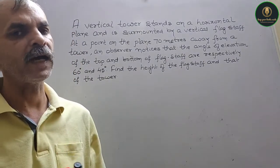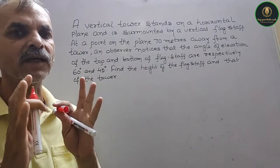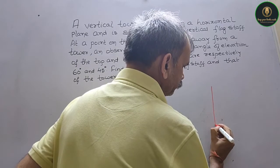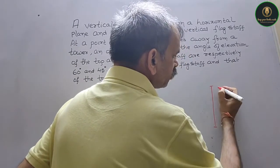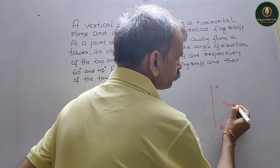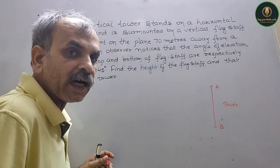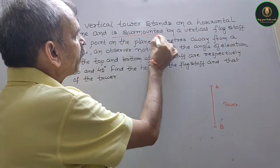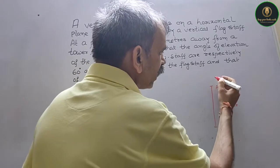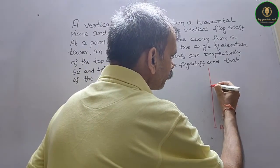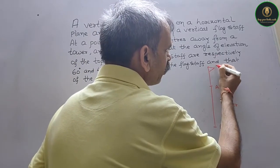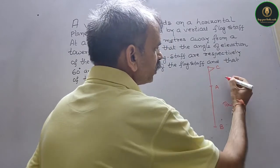Let's understand this. Initially there is a tower, so this is your tower. This is your point A and B, so this is your tower. It is surmounted by a vertical flagstaff, that means on top of this you have a flagstaff. This is your flagstaff. Suppose this point is your C point, so this is your flagstaff.